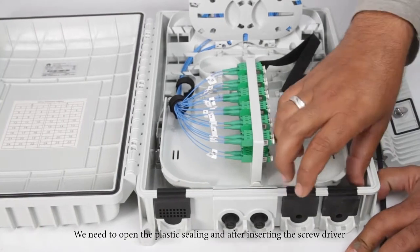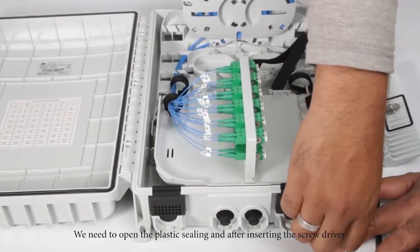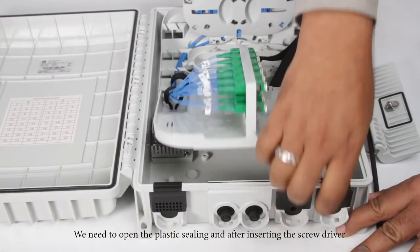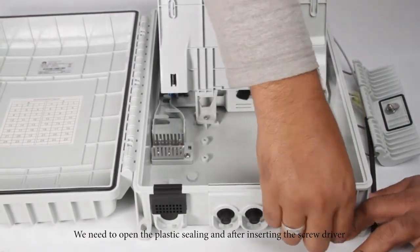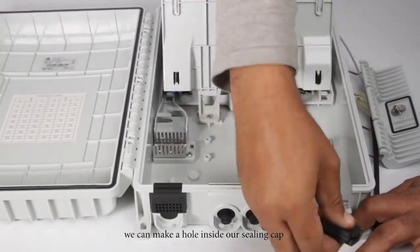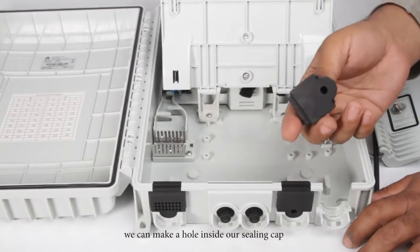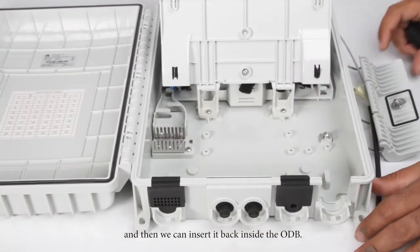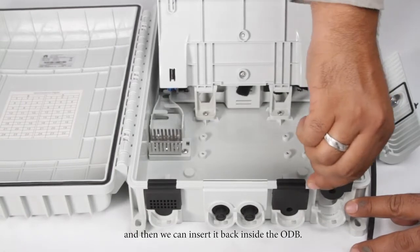We need to open the plastic seal. After inserting the screwdriver, we can make a hole inside our sealing cap and then we can insert it back inside the ODB.